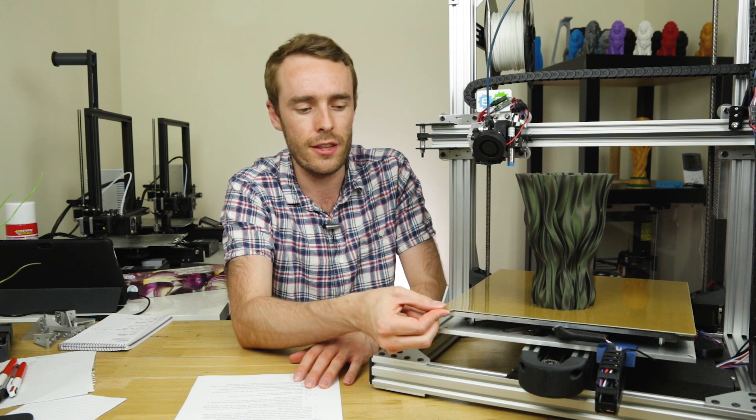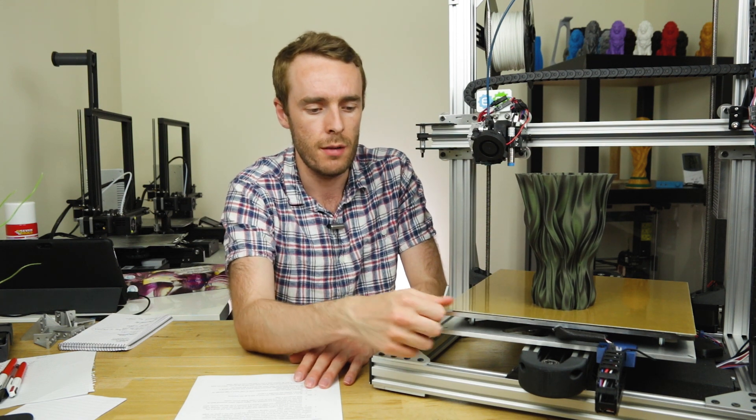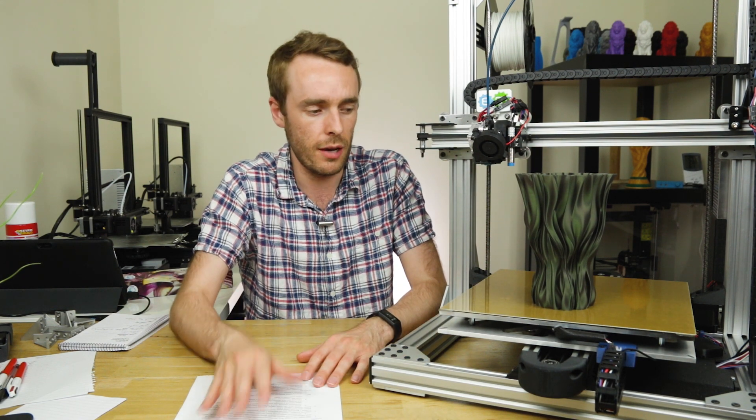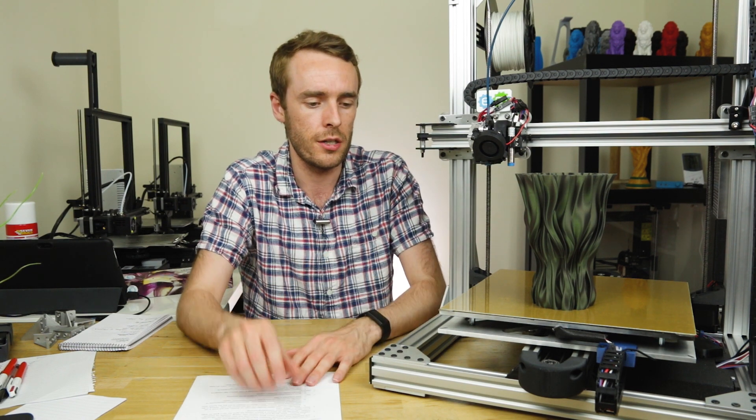This one is fairly thick, which means it's fairly robust but can be fairly difficult to bend. However, on a bed this size, you don't necessarily need to flex it that much, and you've got this print surface on top which we'll talk about in a moment, which also means less flexing than normal may be required.